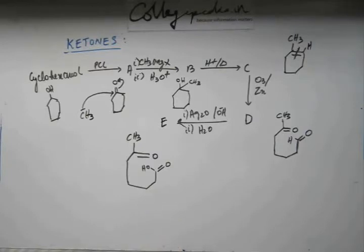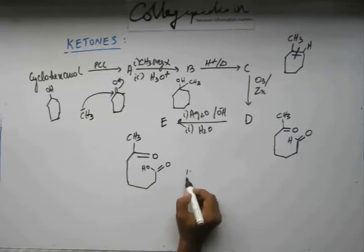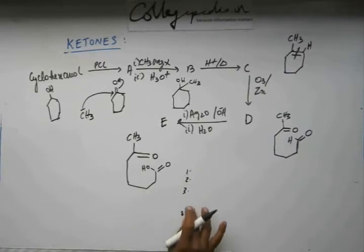When you are too much familiar with the reaction, then you don't even have to write the reactant, reagent and product. You just have to write the name of the reaction. That these are the 1, 2, 3, 4, 5, 6, 7, 8, 9, 10, whatever the number is. This is the reaction that I have studied.